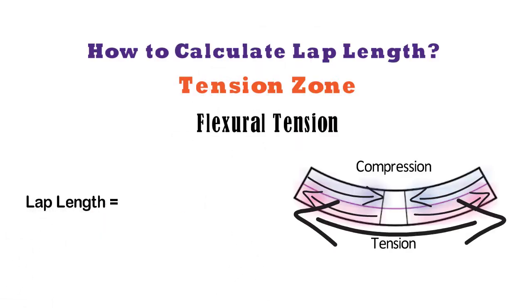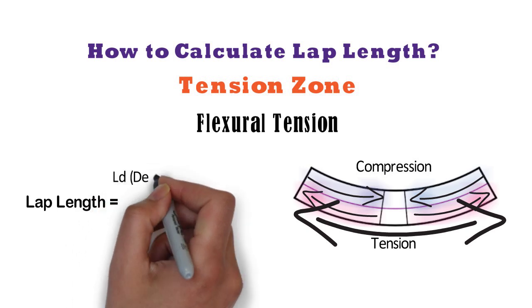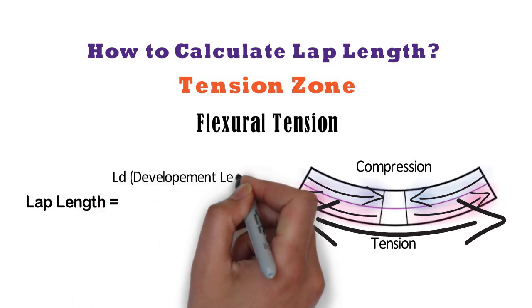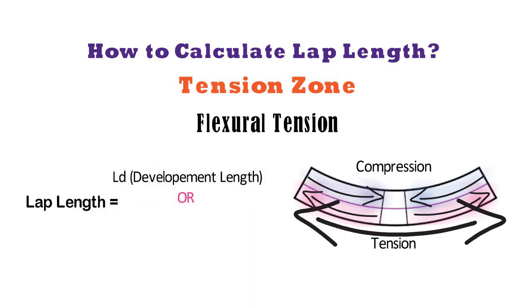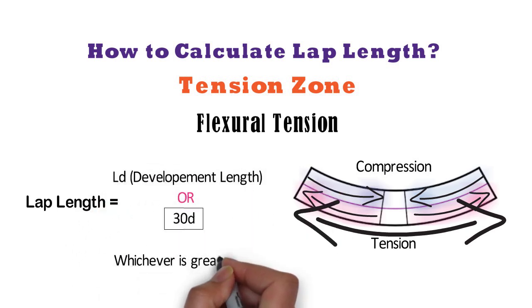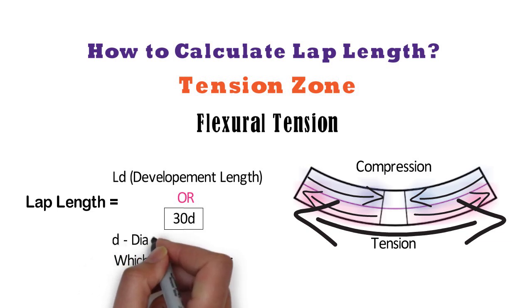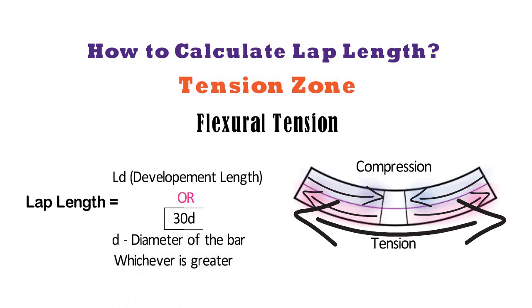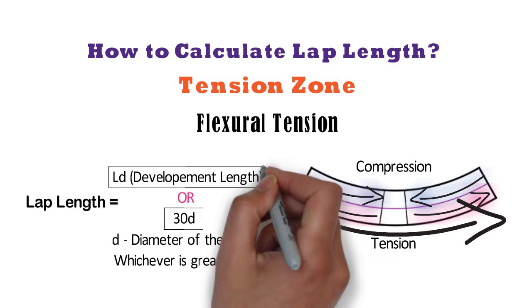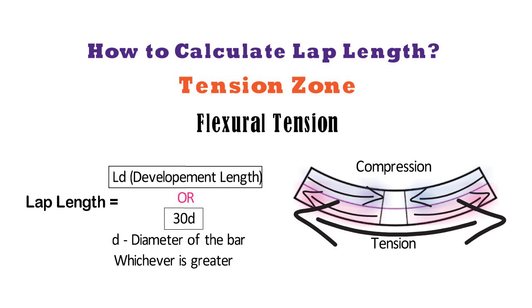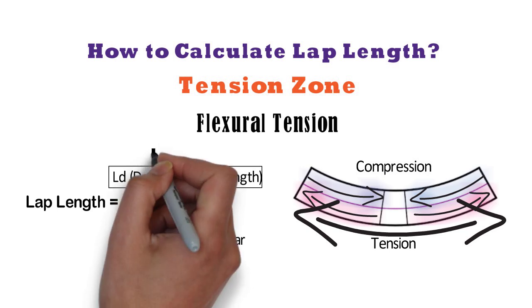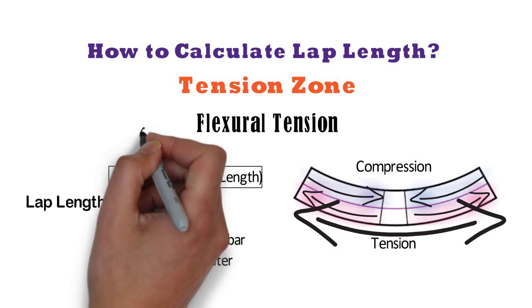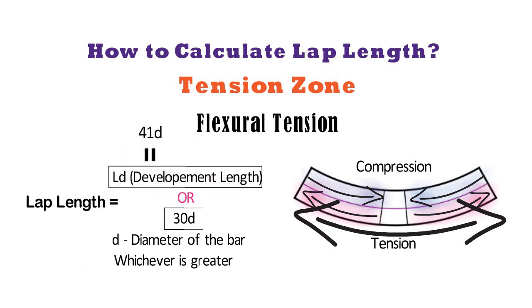For flexural tension, the lap length shall be LD (i.e. development length) or 30D, whichever is greater. D is the diameter of the bar. The concept of development length will be explained in the next video. Generally, it is 41D, where D is the diameter of the bar.